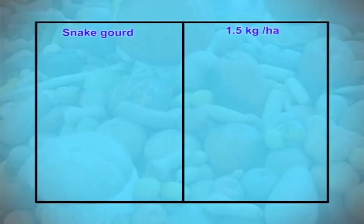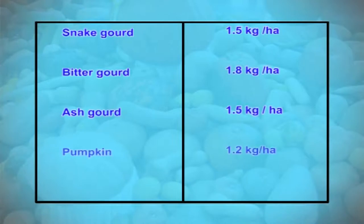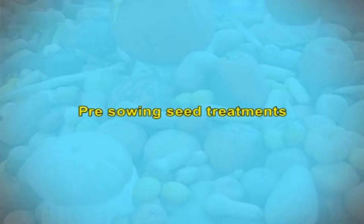The seeds have to be obtained from an authenticated source approved by the seed certification agency; the seed should be tagged and the seed bill obtained. The seed rate for different cucurbit species: snake gourd requires 1.5 kg per hectare, bitter gourd 1.8 kg per hectare, ash gourd 1.5 kg per hectare, pumpkin 1.2 kg per hectare, and ribbed gourd 1.5 kg per hectare.